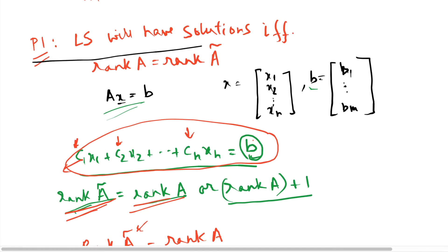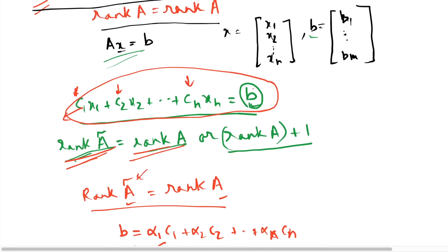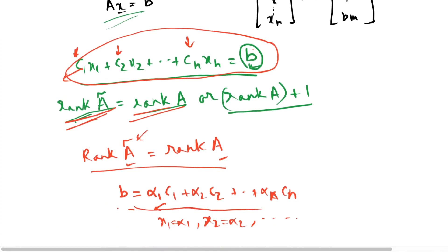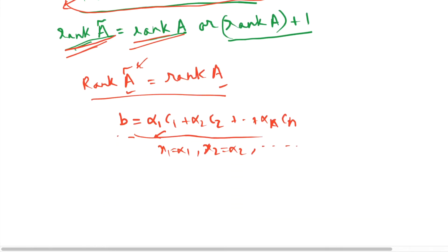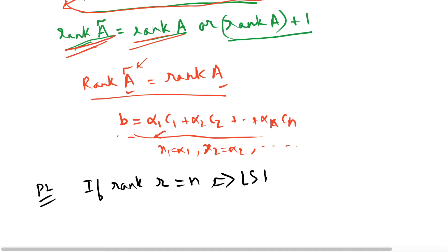Now the second claim P2: if rank r equals n, the number of unknowns, then this implies that the linear system has a unique solution.